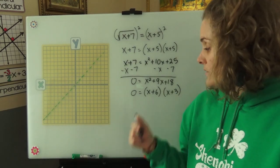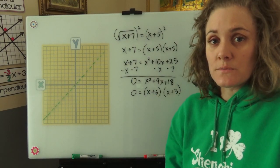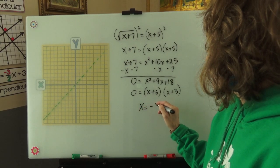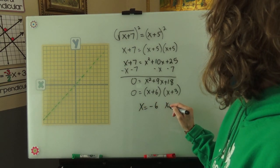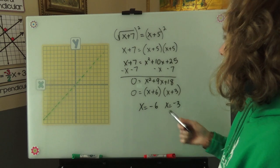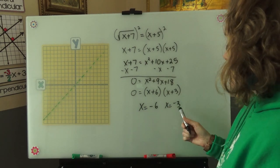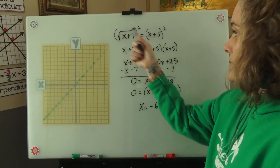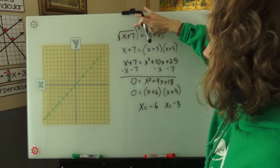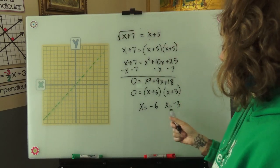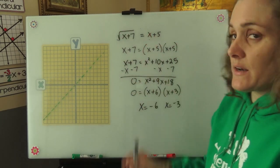Lastly we will solve for x on both of these parentheses. Now we can plug negative 6 and negative 3 into our original equation before we square both sides and see which one of these would create a true statement.